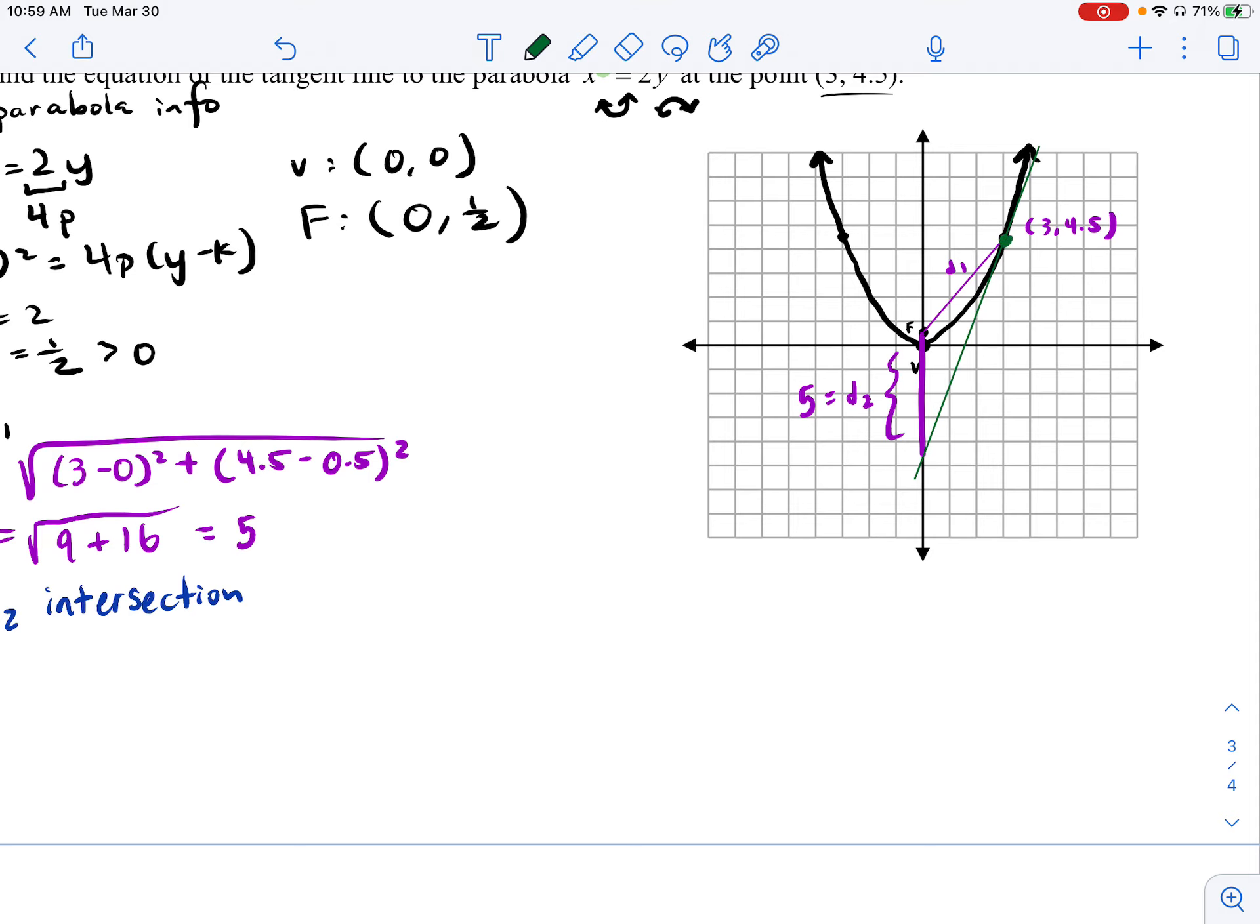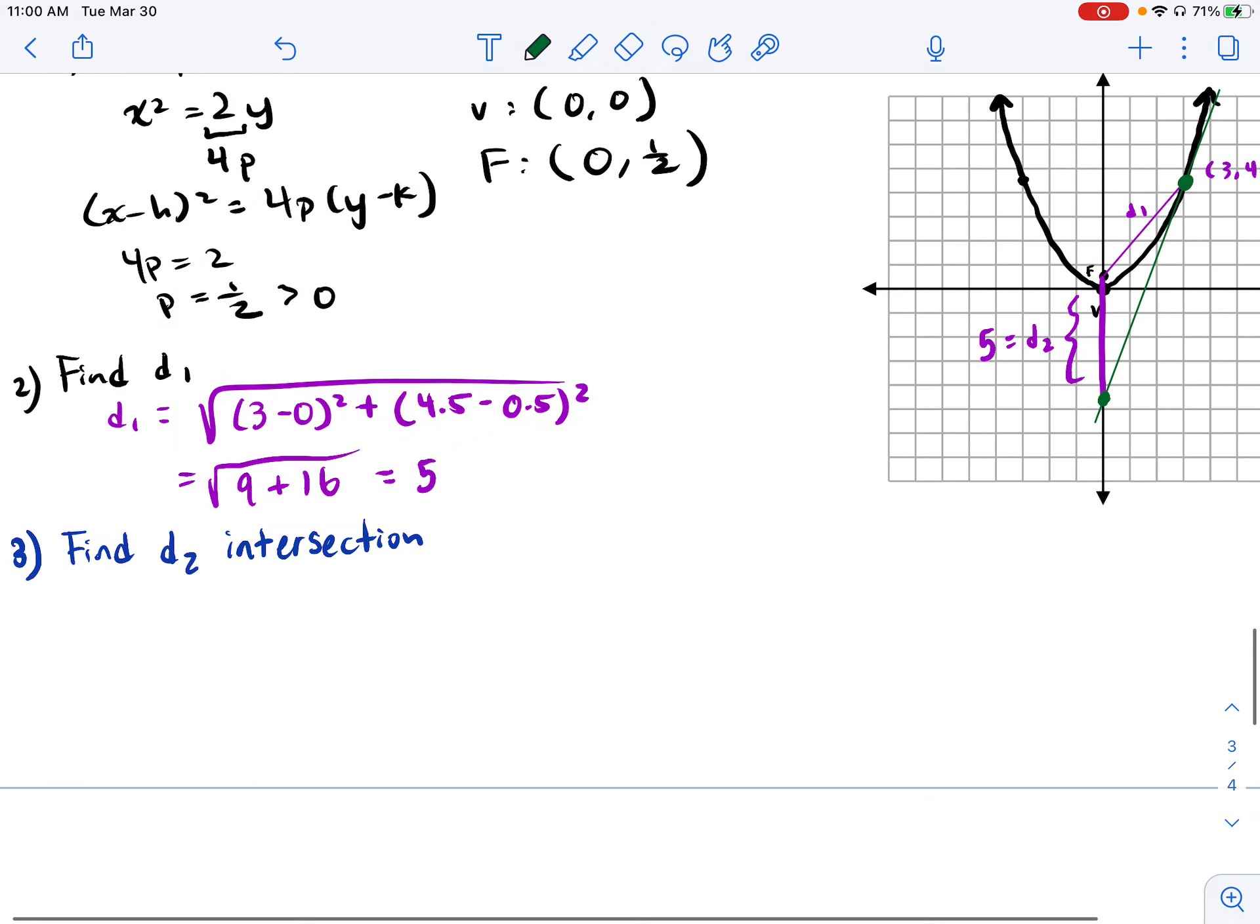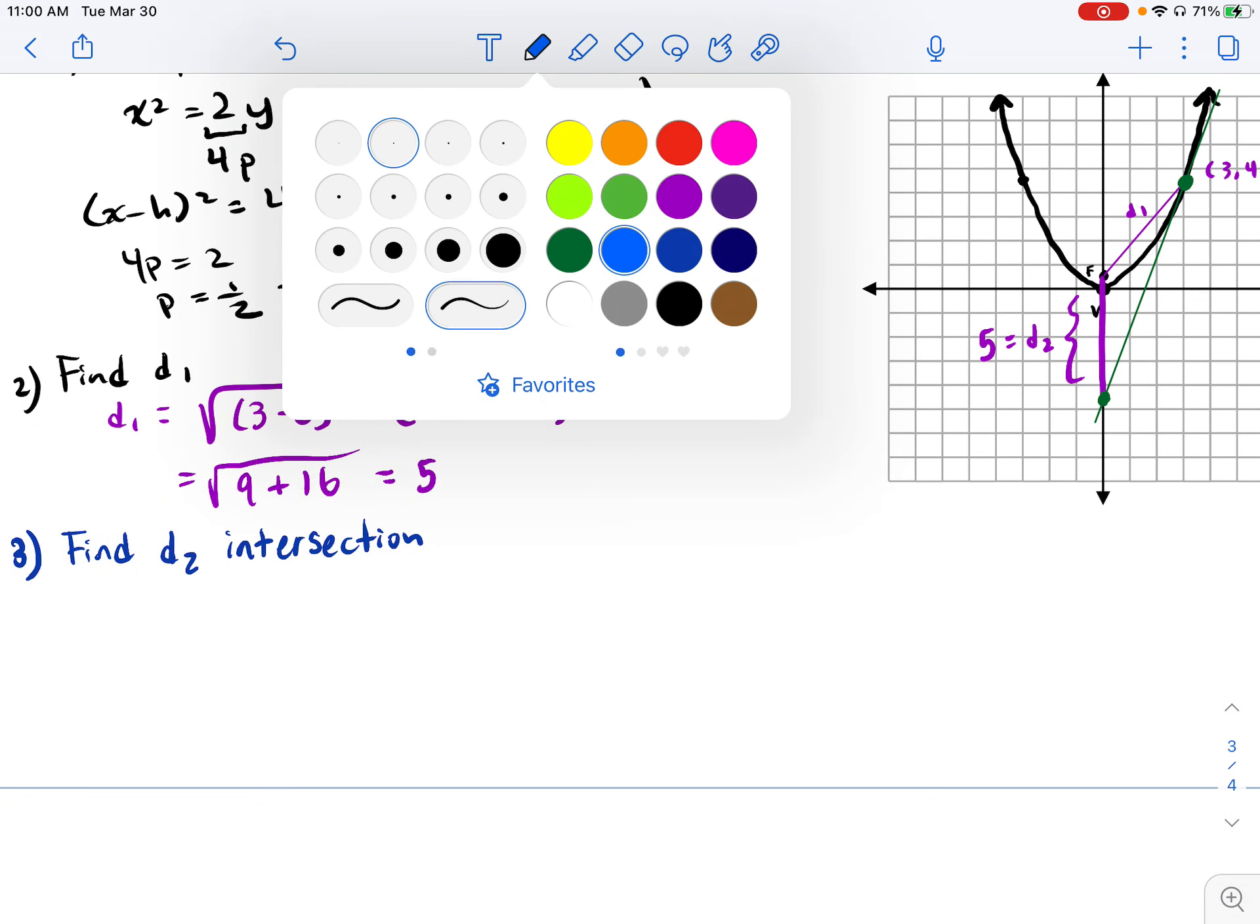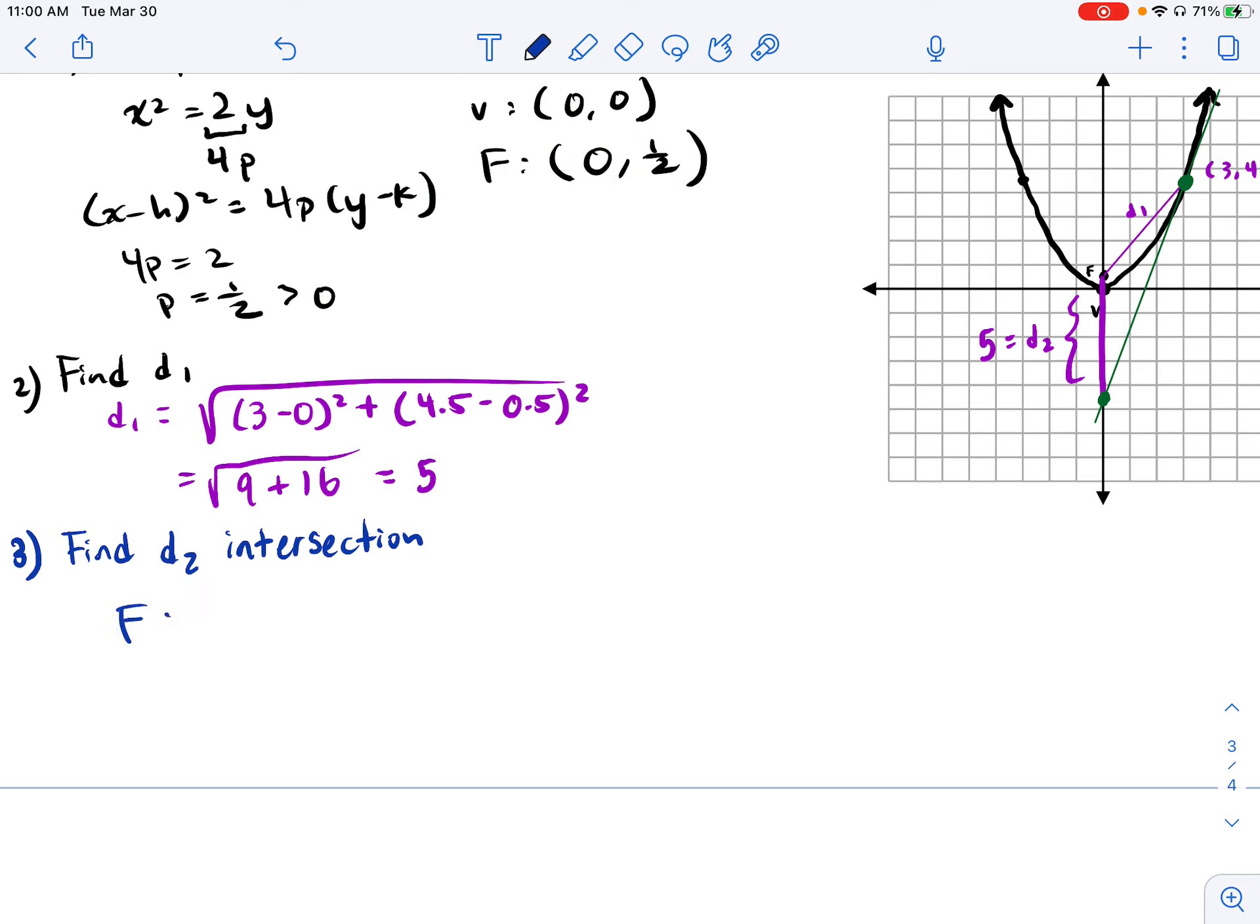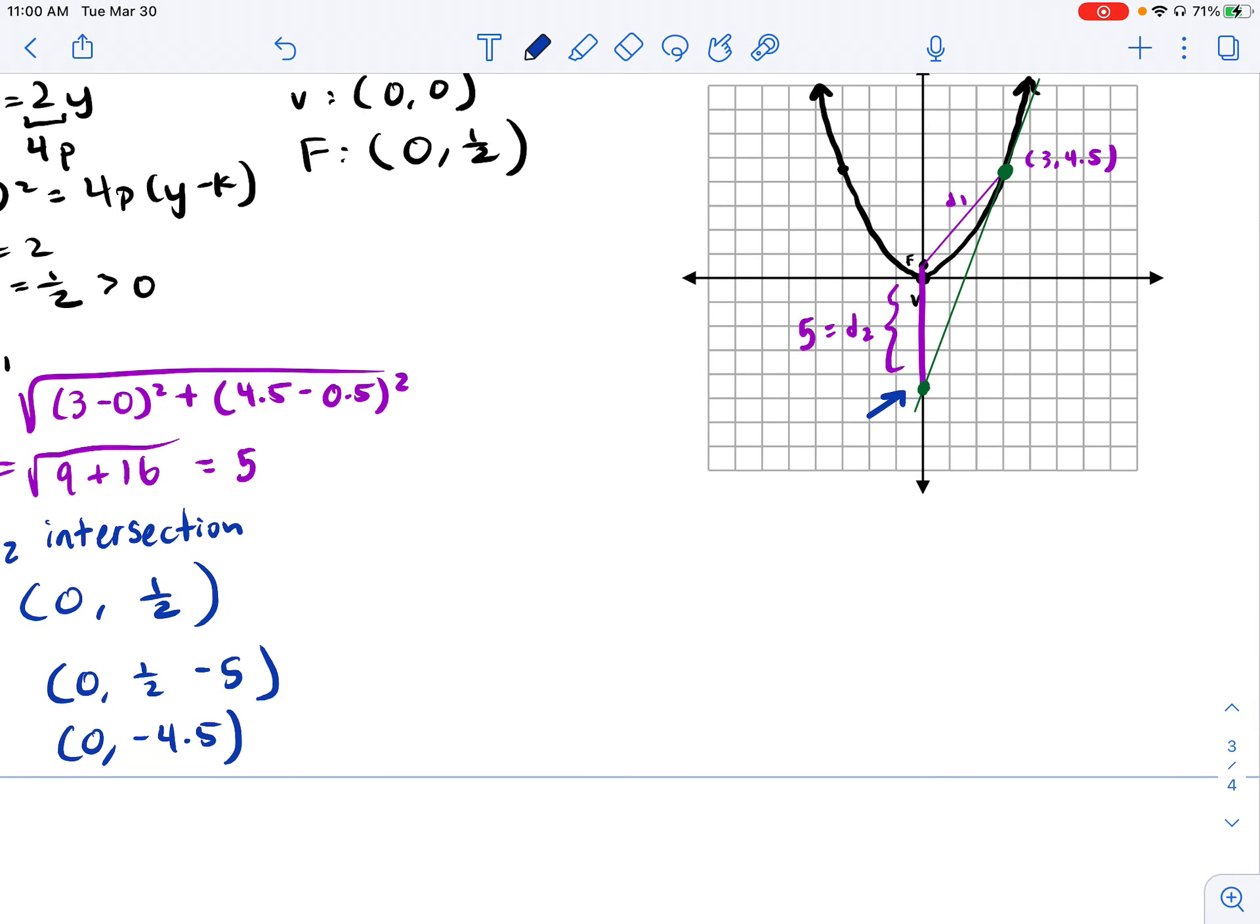D2 units down from where the focus is. So let's find that. So the D2 intersection, where was that? We said if I know that my focus was (0, 1/2), that means if I subtract 5 from 1/2, then that's going to be this point down here. That would be (0, -4.5).